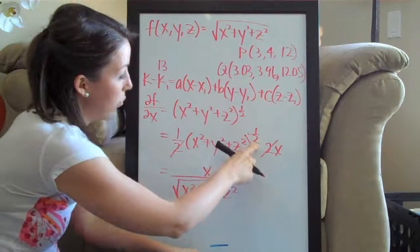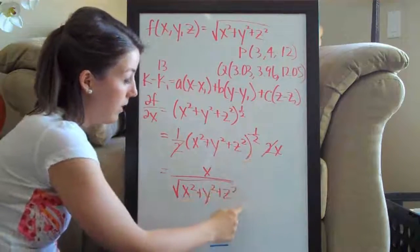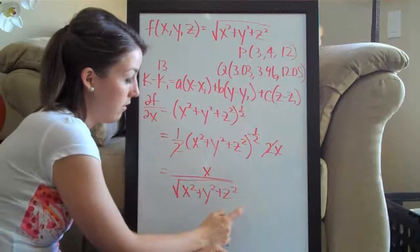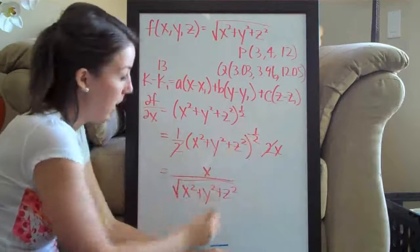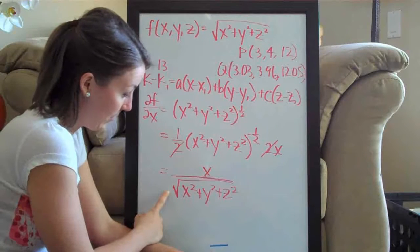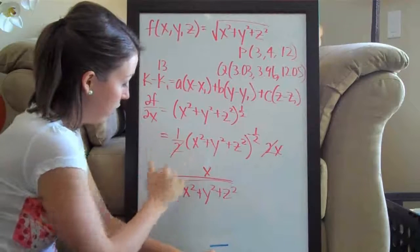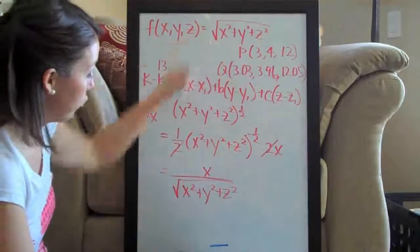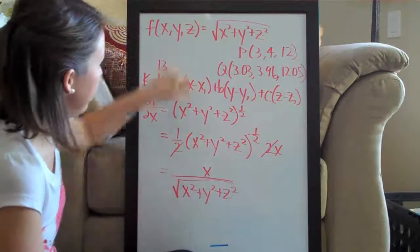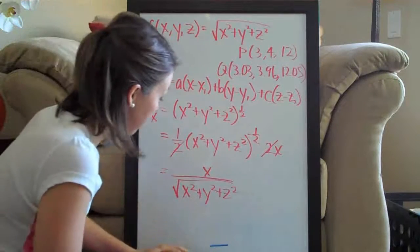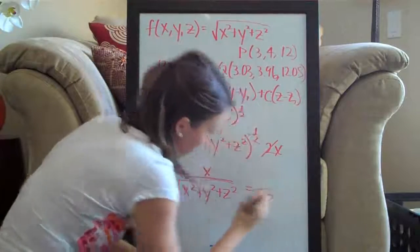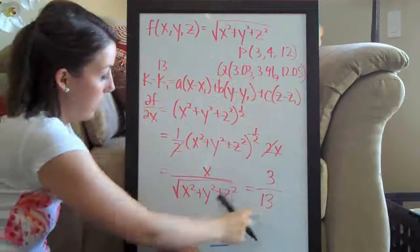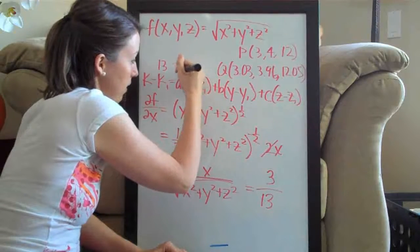We moved the negative one-half power to the denominator, changing it to positive one-half, and anything raised to the one-half power is the square root. So the partial derivative with respect to x simplifies to x over the square root of x squared plus y squared plus z squared. Now we plug in the original point (3, 4, 12). We already know the bottom is 13, so plugging in x = 3 gives us 3 over 13. So a equals 3/13.